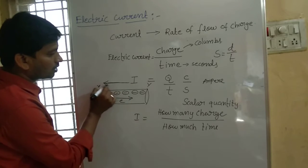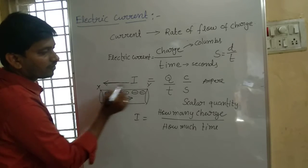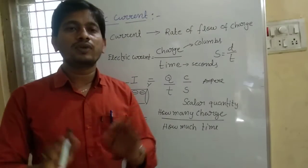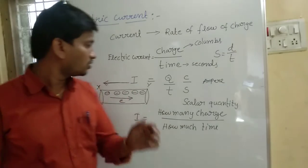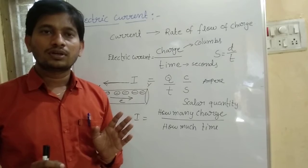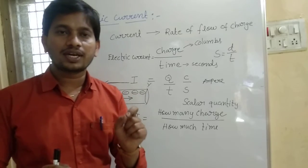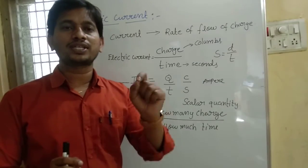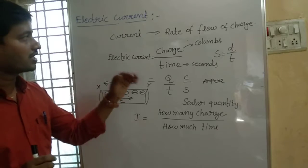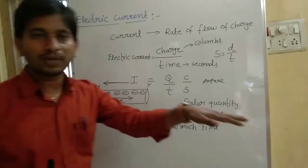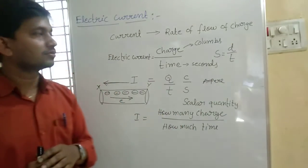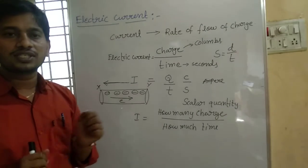The direction of electric current is always opposite to the direction of electrons. No one knows exactly why — it is simply a convention. So, what do you mean by current? Current is nothing but rate of flow of charges.